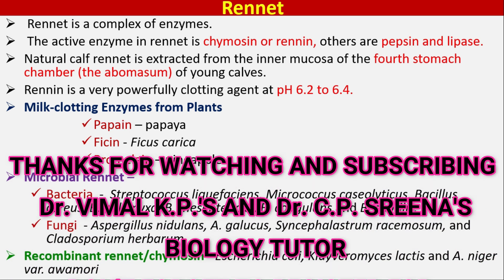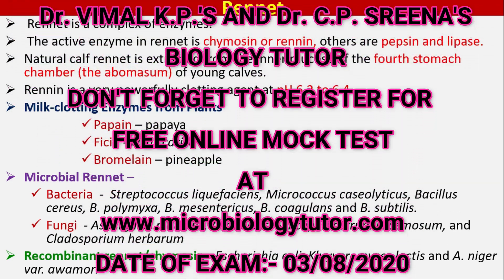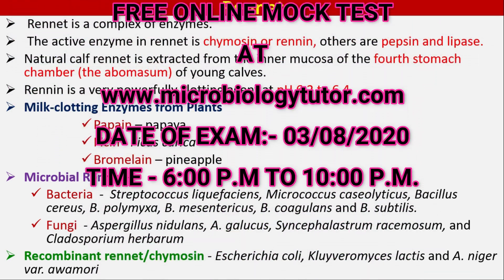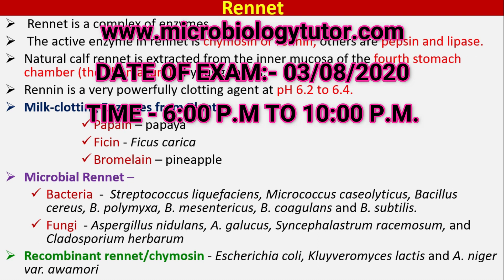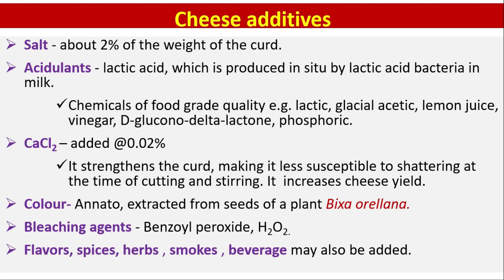Recombinant rennet or chymosin is produced using E. coli, Kluyveromyces lactis, and Aspergillus niger variety Awamori. Regarding additives: salt is about 2% of the weight of the curd. Acidulants include lactic acid, which is produced in situ by lactic acid bacteria in milk.